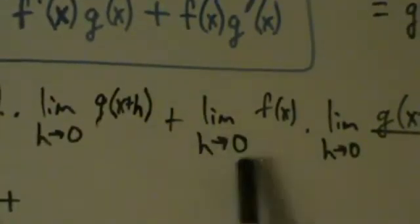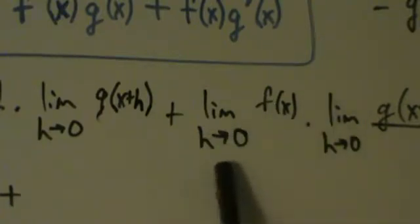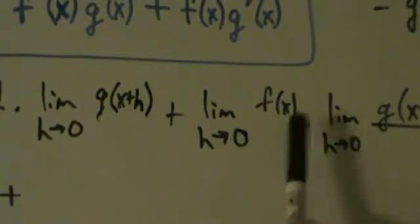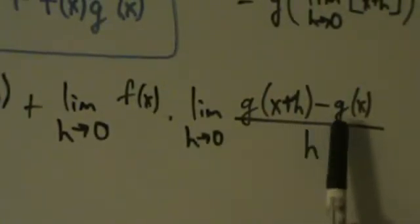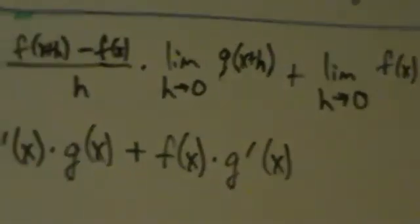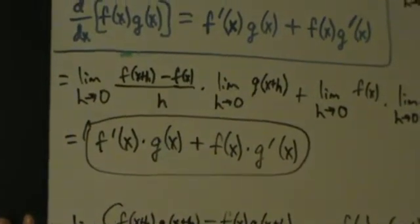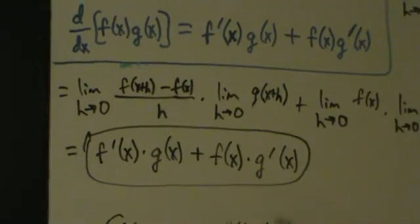The limit as h→0 of f(x) is just f(x), since there are no h's involved — as far as the limit is concerned, it's a constant. And the limit as h→0 of [g(x+h) minus g(x)] over h is just the definition of the derivative of g, which is g'(x). So our final result is f'(x)·g(x) + f(x)·g'(x) — and that's the proof of the product rule. In the next couple of videos, we'll see examples.